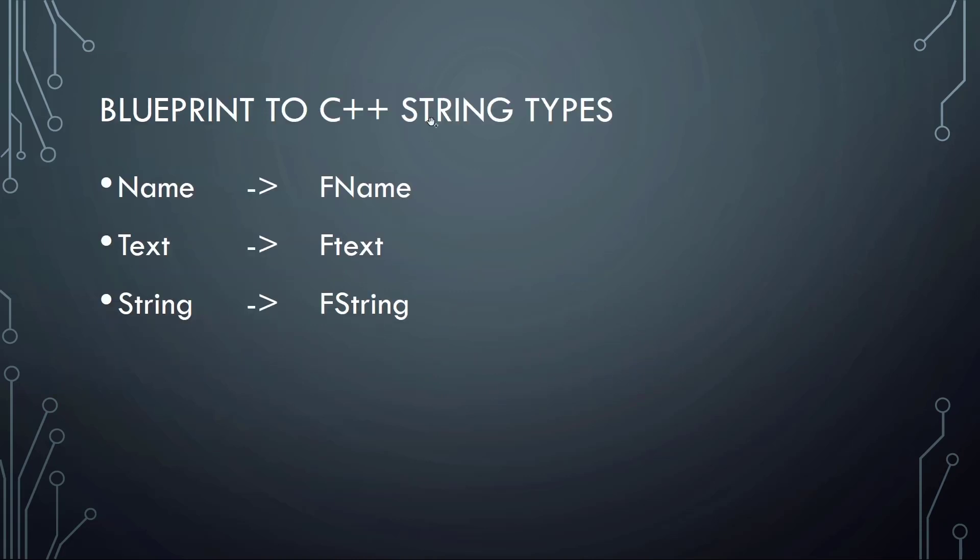If you're familiar with blueprints and you've used name, text, and strings, here's a short conversion from blueprint to C++. So a name is called FName in C++, text is called FText, and string is called FString.